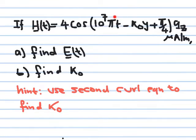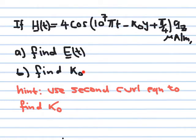Omega here is 10^7 π radian per second, and the expression has a phase shift of π/4. The problem asks us: given this magnetic field as a function of time, find the electric field as a function of time, and then find k_naught.